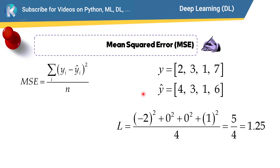We want to calculate the error in this prediction. First, we should calculate the difference between the actual value and the prediction value, and we should raise that to the power of 2 — this is called the squared error. Then we sum all of these errors and divide by N, taking the average of these squared errors. So this is called mean squared error.